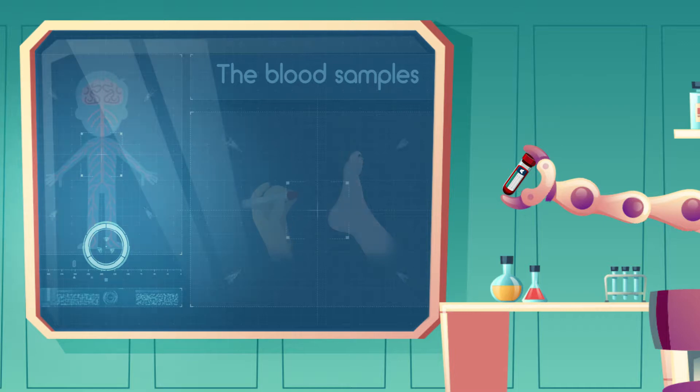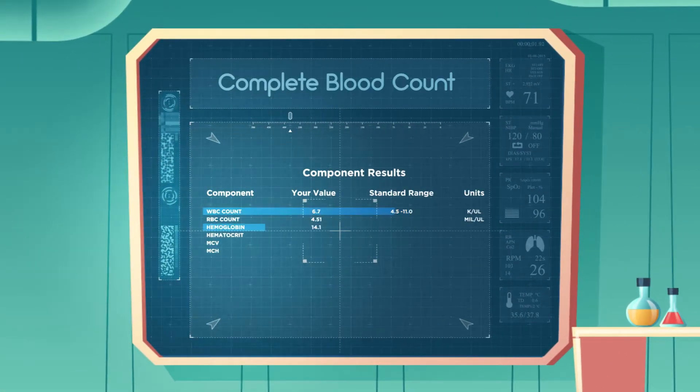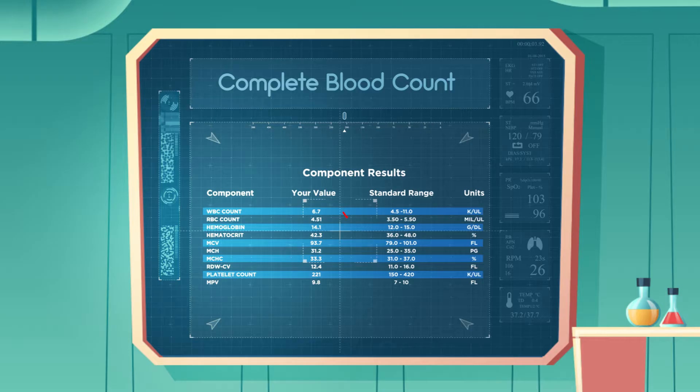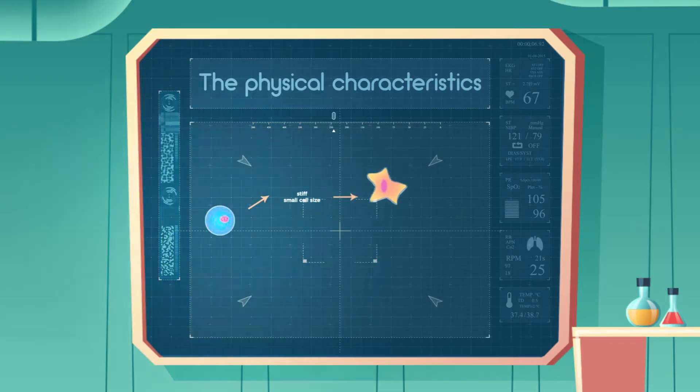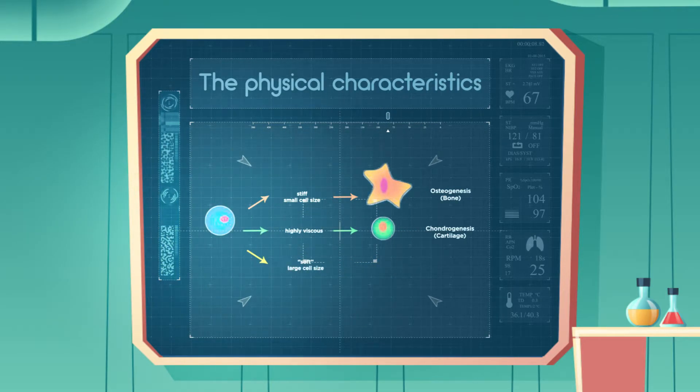The results of a CBC can provide information about not only the number of cell types but also can give an indication of the physical characteristics of some of the cells.